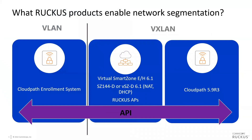What products enable network segmentation within the Ruckus portfolio? For a VLAN approach, CloudPath Enrollment System enables VLAN whether or not you have a Ruckus network in place — it works with networks from other vendors as well. For VXLAN, as implemented at Comscope Ruckus, you would need virtual SmartZone — either Essentials or High Scale, version 6.1 — plus the SmartZone data plane (hardware appliance or virtual), Ruckus APs, and CloudPath 5.9 release 3.